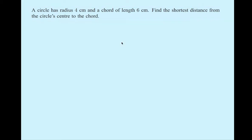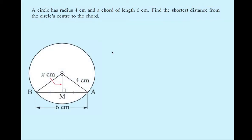By this new theorem, this perpendicular bisects the chord. So if the chord is six, this portion here is three. Now we have a right triangle — we know this side is three and this side is four. We can use the Pythagorean theorem to solve for the length we need, which is the shortest distance. Here's the diagram with a little more detail — add that to your notebook. We're looking for X.